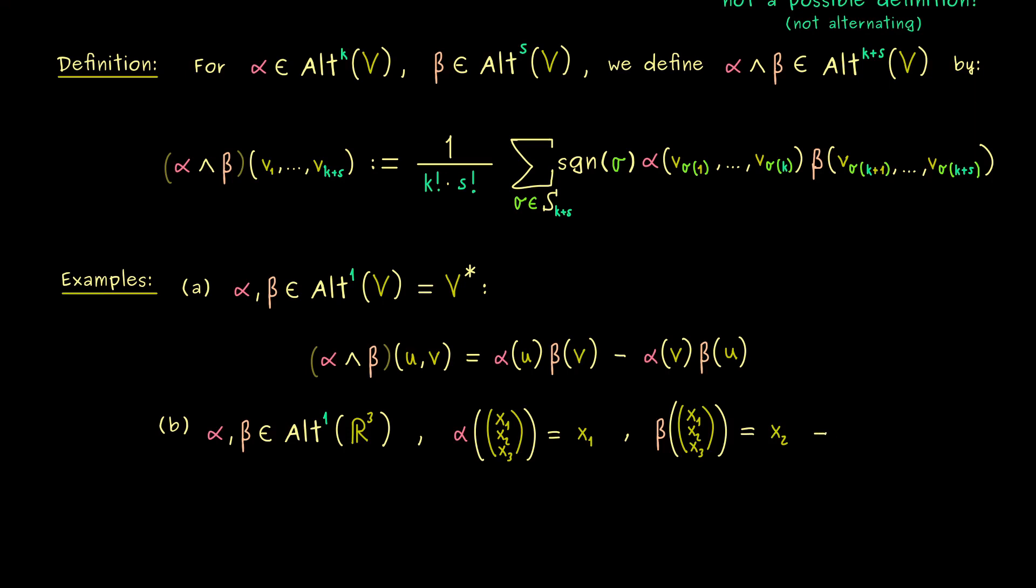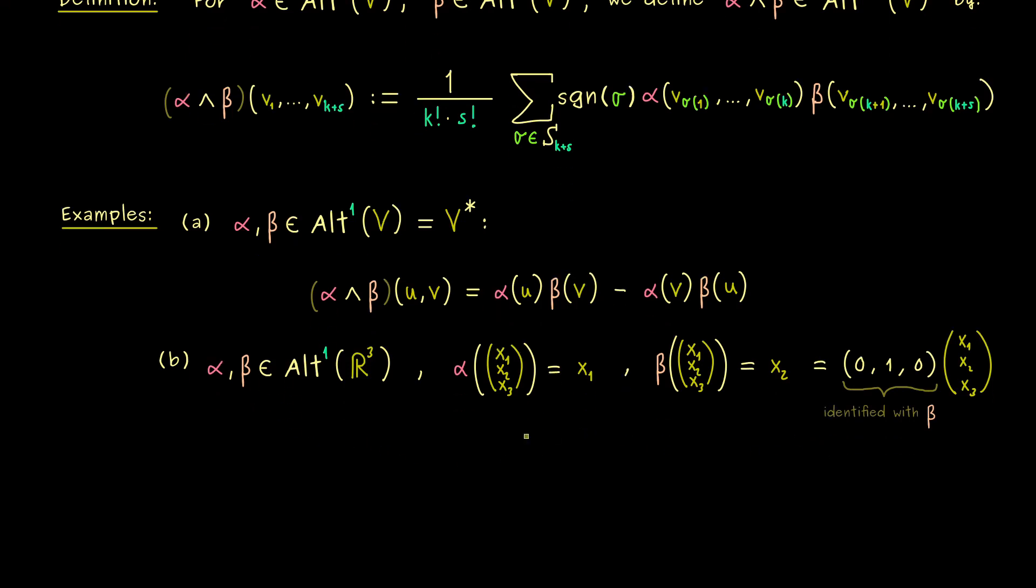Okay, now in addition, we can also define beta as a linear functional, and maybe it gives the second component. And now what you should know is that we can rewrite that as a matrix product. Namely, we can write a row vector (0, 1, 0) and our column vector (x₁, x₂, x₃). And if you see it like that, you could say that beta is actually given by this row vector. So in that sense, giving an alternating 1-form is the same as giving a row vector here.